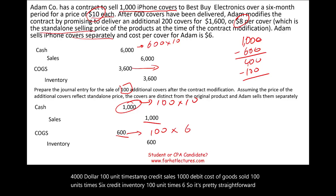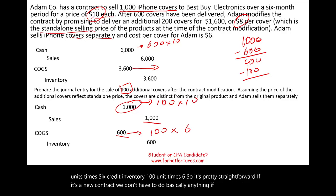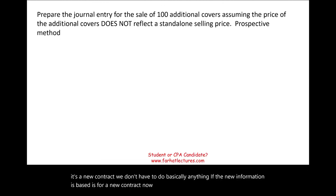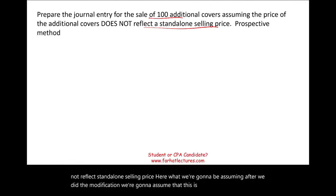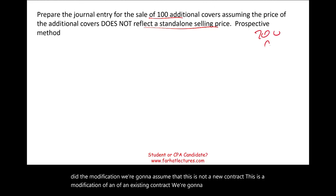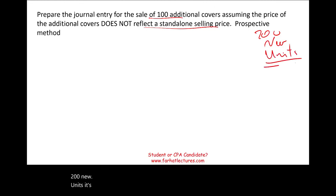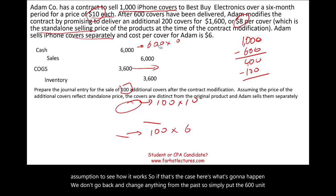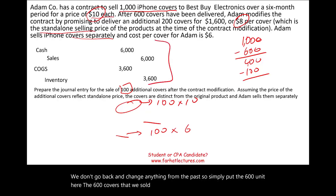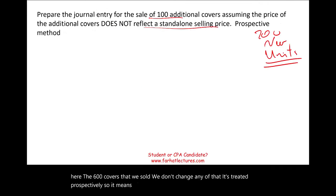Now let's assume the additional 100 covers' price does not reflect a standalone selling price — meaning this is a modification of the existing contract, not a new one. We treat it prospectively: we don't go back and change anything from the past. The 600 covers already sold remain as booked. Instead, we blend the old contract with the new contract going forward.